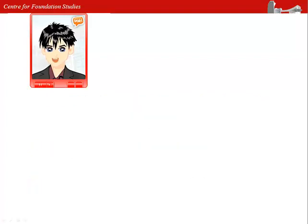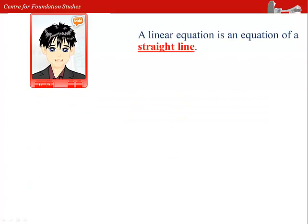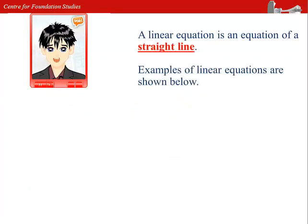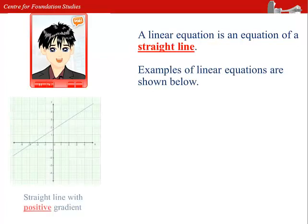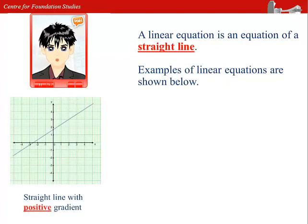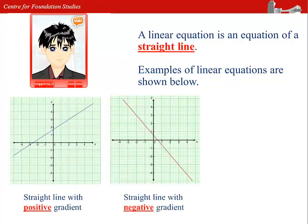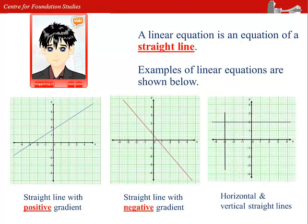A linear equation is an equation of a straight line. Here are a few examples of different straight lines: a straight line with positive gradient, a straight line with negative gradient, horizontal and vertical straight lines.